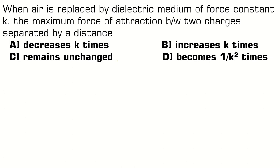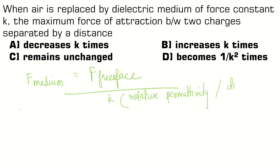Here air is replaced by dielectric medium of force constant k. So first we must understand that F medium equals F free space divided by k. And this k here is called relative permittivity or dielectric constant.